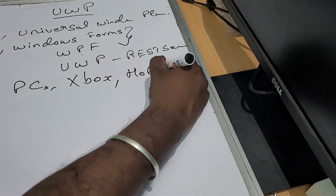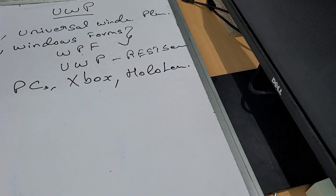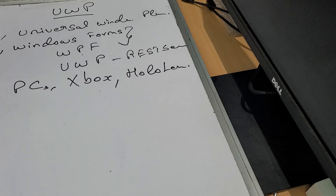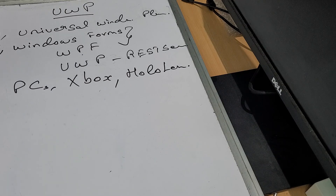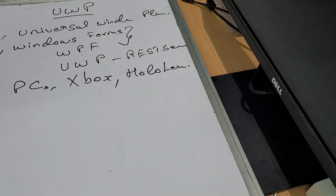HoloLens is also supported. HoloLens is a virtual reality device — you can use it like a glass. It allows you to use a virtual reality environment; for example, like you see in James Bond films, you can use a computer screen in empty space, in any functional area. That is HoloLens, and you can use it with UWP.